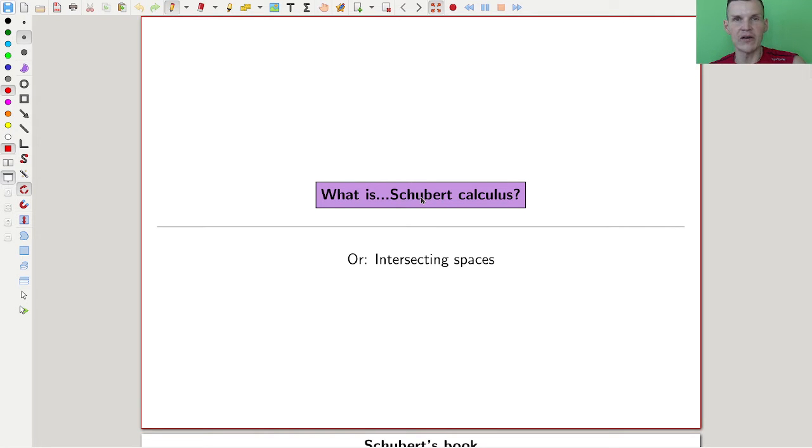Okay, welcome everyone to this continuation of what is algebraic geometry. Today we'll tell you once more about the cohomology ring of the Grassmannian. I know I said it will not appear anymore, but we need to do it because it's historically very important and I should tell you where it originally comes from.